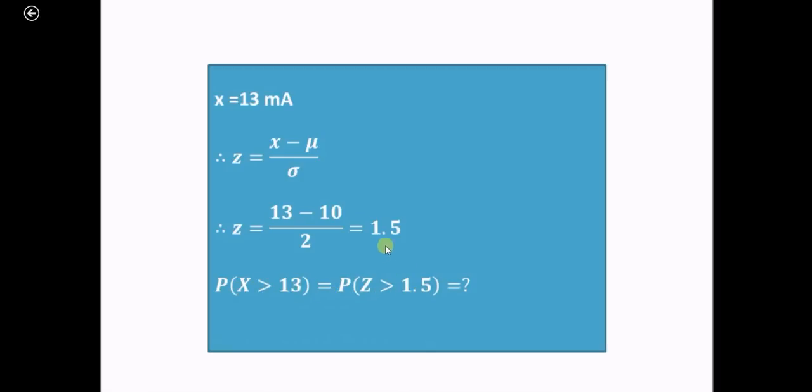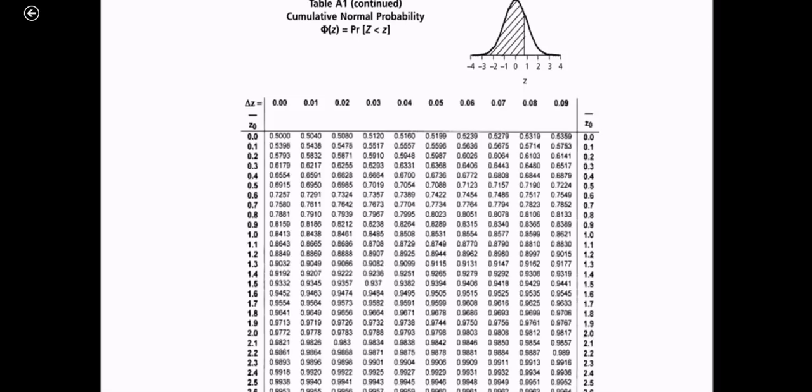Our value of z is 1.5. We will use the table to find out the cumulative normal probability. This is the table which will give the cumulative normal probability, that is probability of z less than z. Our value is 1.5 and corresponding to that, the value is 0.9332.